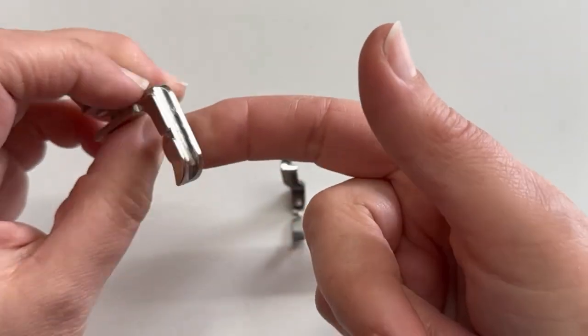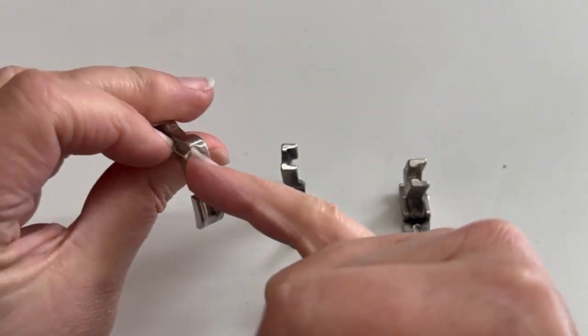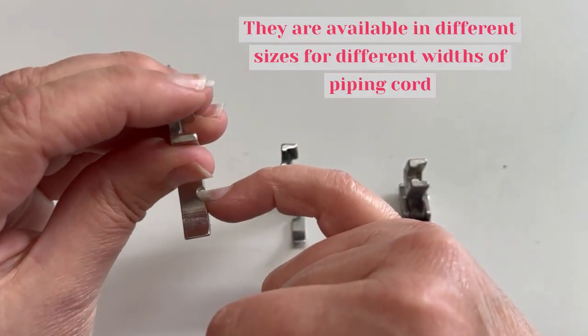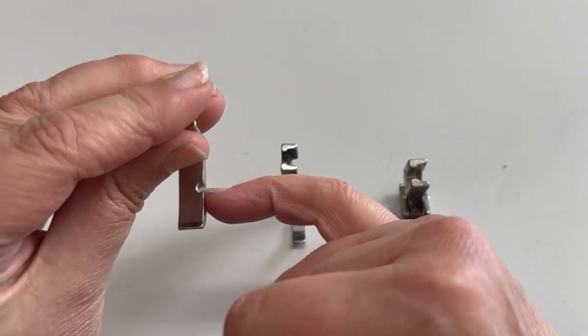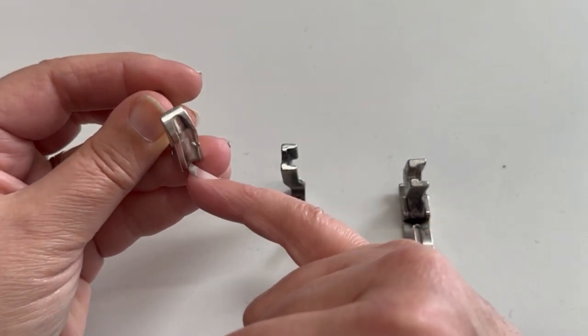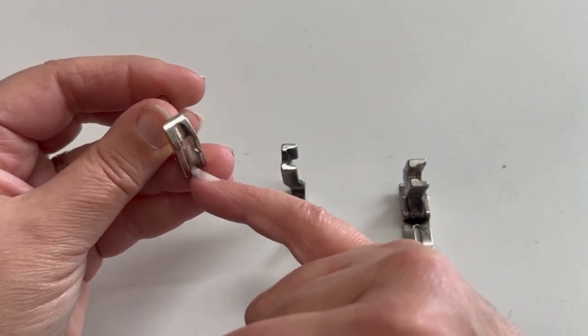These are actual piping feet with a little groove in the underneath, so you can sit the piping cord into that groove and in theory the needle comes down through that hole there. My experience is that it never gets the piping tight enough within the fabric that you're encasing the piping cord into.